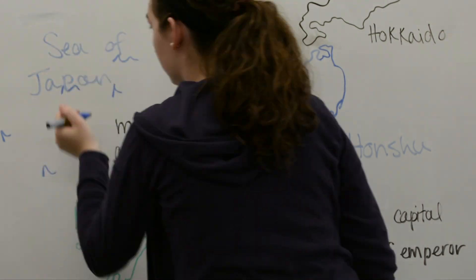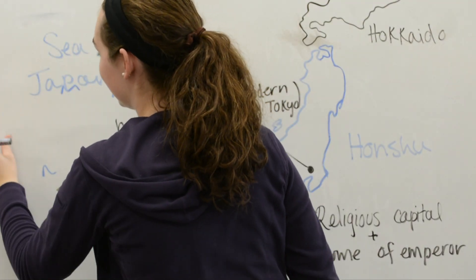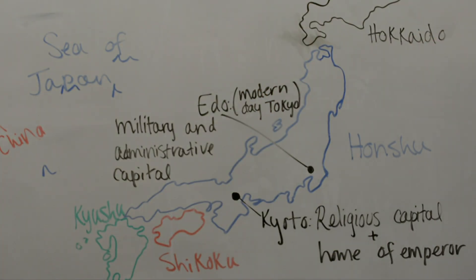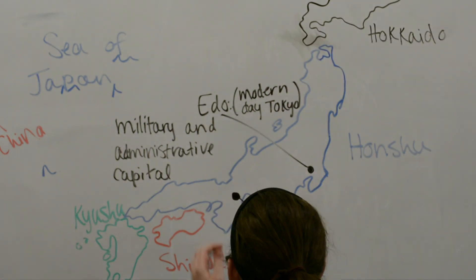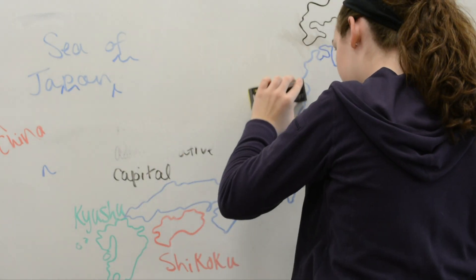To the west lies the Sea of Japan, separating Japan from its neighbor China. Traditionally, Japan was very influenced by China, including their Confucian social classes.